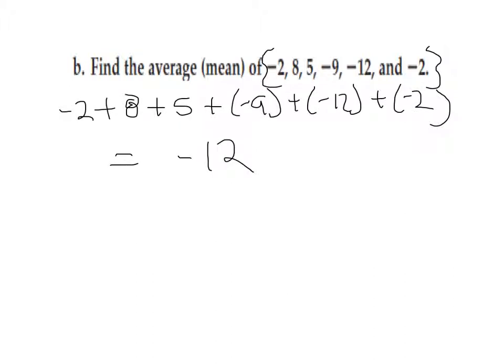I added these together and the total was a negative 12. Next step is to divide it by the number of data we have. We have 1, 2, 3, 4, 5, 6 numbers in our data set. So, that's our denominator. We're going to divide by 6. Since the signs are different, I know my answer is going to be negative. 12 divided by 6 is 2. The mean or average of this data set is negative 2.